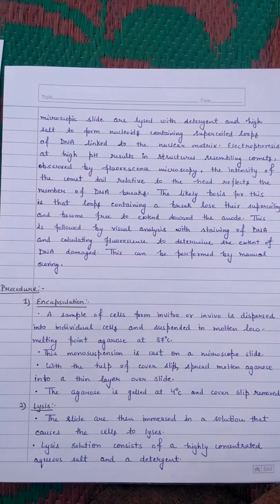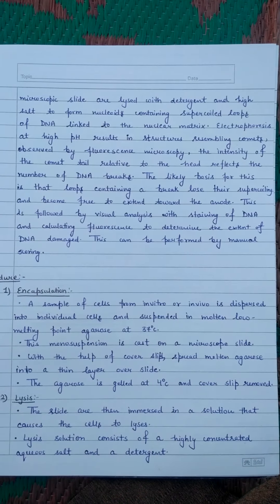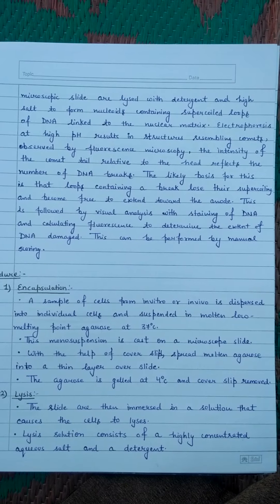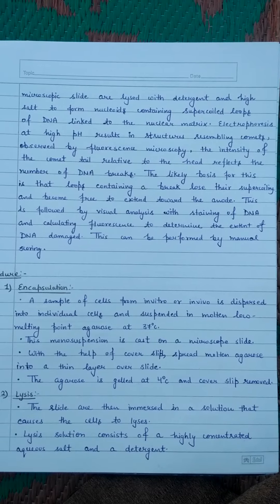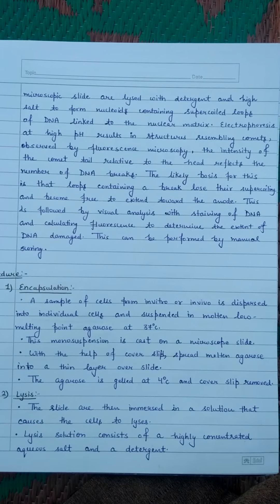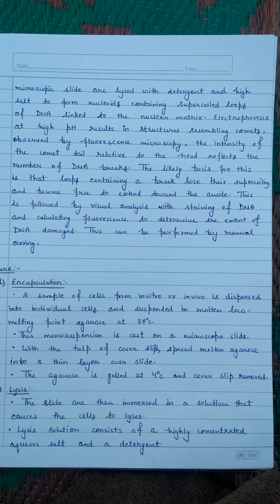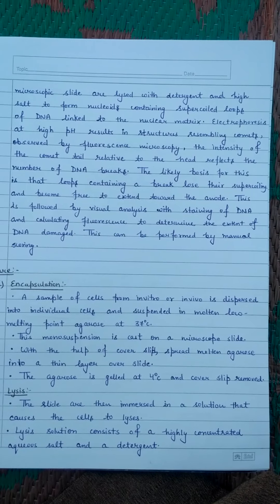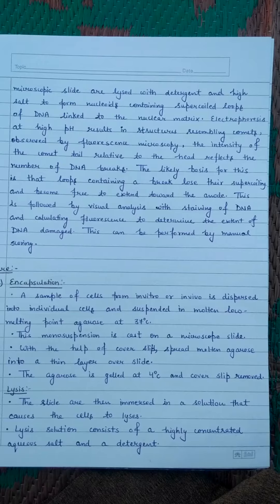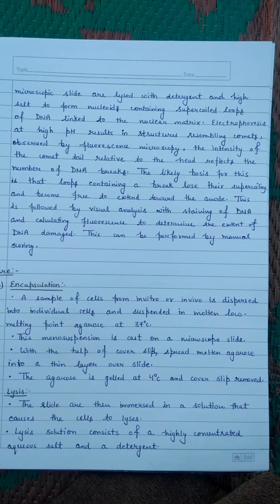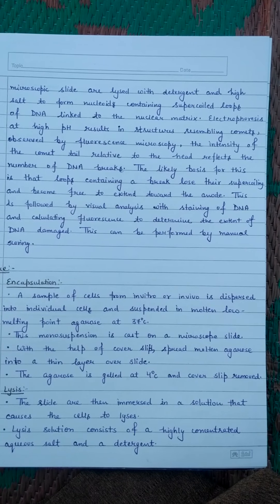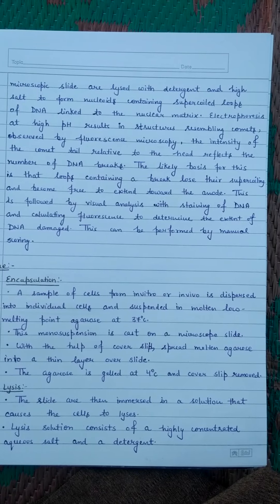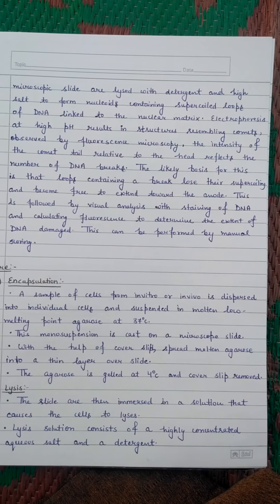A slide is made with agarose gel containing a single cell suspension over a microscopic slide. We then lyse this slide with a detergent or salt so that the nucleoid inside — which is supercoiled and forms loops of DNA — is released. Then we electrophorese the microscopic slide containing the single cell embedded in agarose gel. After electrophoresis at high pH (alkaline conditions), the DNA structure resembles a comet, which we observe using fluorescence microscopy.